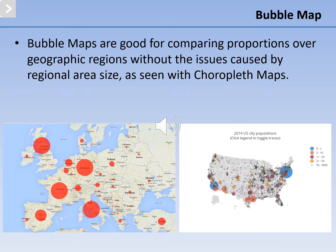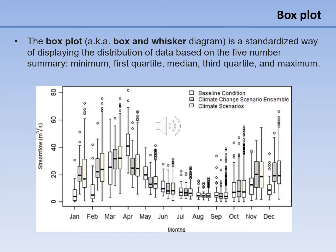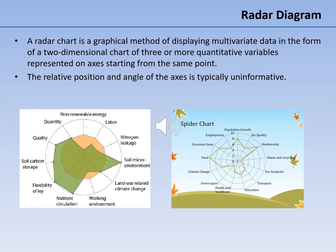Bubble maps are good for comparing proportions over geographic regions without the issues caused by regional area size, such as those seen in choropleth maps. A heat map is a geographic representation of data where individual values contained in a matrix are represented as colors. The box plot, otherwise known as a box and whisker diagram, is a standardized way of displaying the distribution of data based on the five-number summary: the minimum, the first quartile, the median, the third quartile, and the maximum. Box plots can be drawn either horizontally or vertically. A radar chart is a graphical method of displaying multivariate data in the form of a two-dimensional chart of three or more quantitative variables represented on axes starting at the same point, and is useful for seeing which variables are scoring high or low within a dataset, making them ideal for displaying performance.